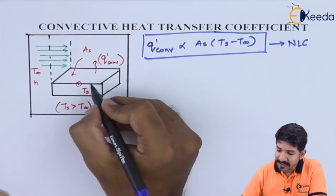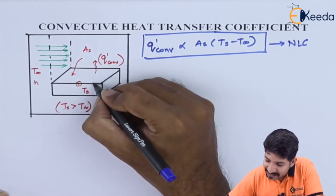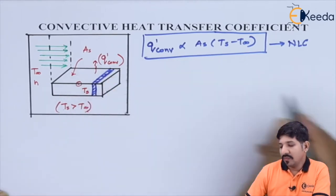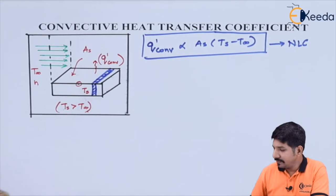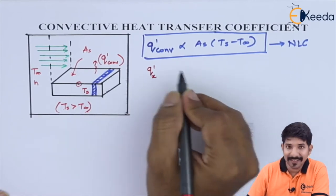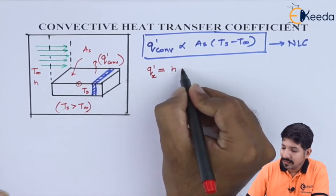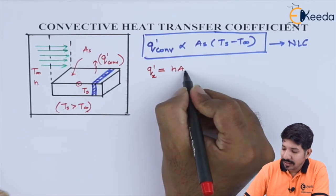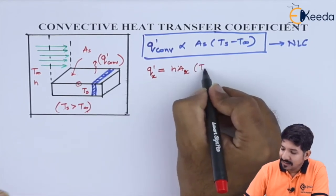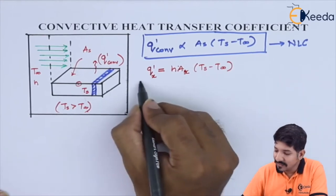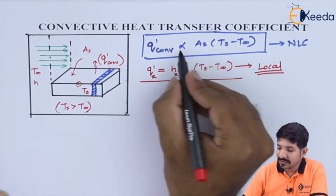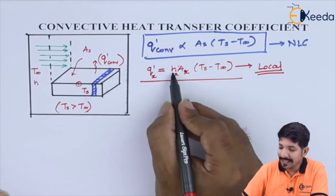Now let us apply the same equation to a small strip. For this small strip, the heat transfer can be written as Q'x = Hx · Ax · (Ts − T∞). Here Hx is the local heat transfer coefficient, which is the proportionality constant in Newton's law of cooling applied at a local position x.